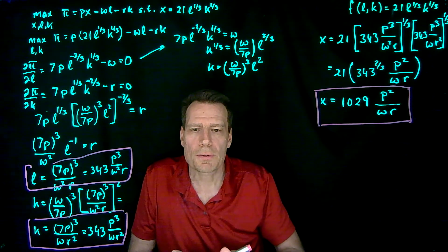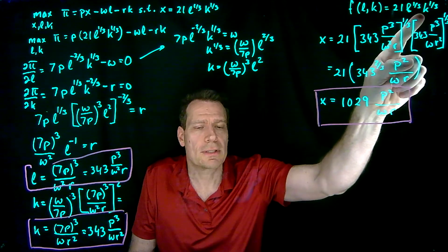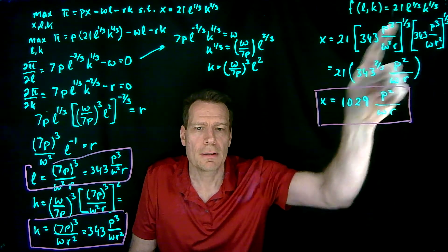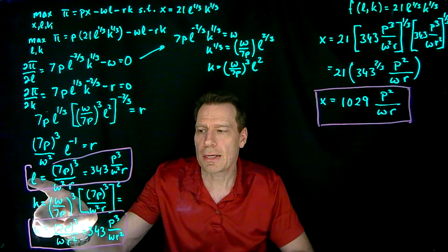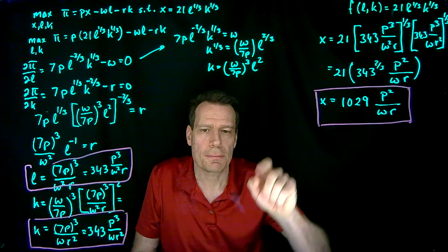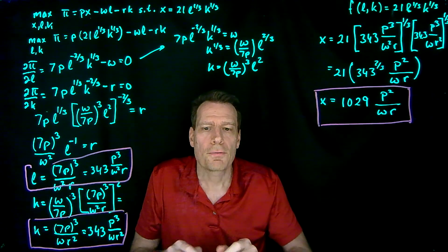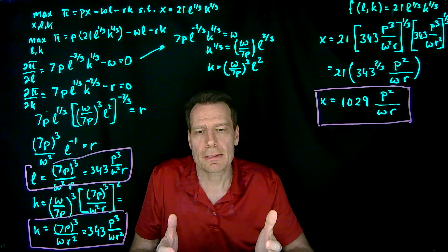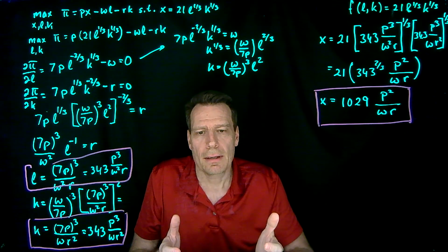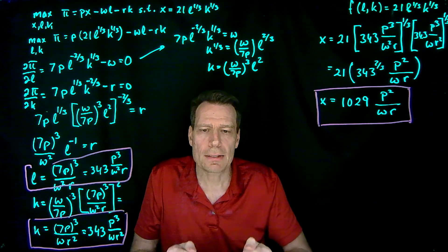So once we have that, we can say that a firm with this technology will hire this much labor, this much capital, and produce this much output for any output price and any wages and rental rates.